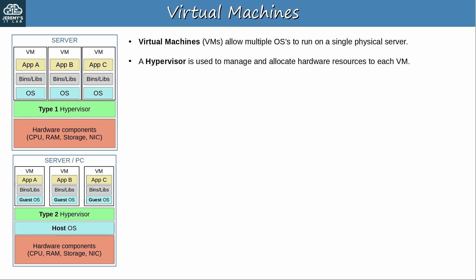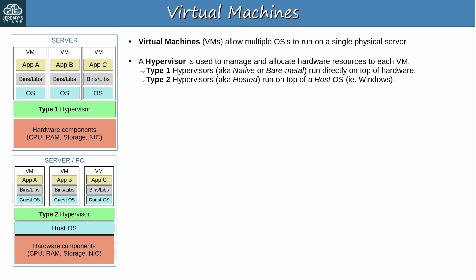There are two main types of hypervisors. Type 1 hypervisors, also known as native or bare metal hypervisors, run directly on top of hardware — notice the type 1 hypervisor directly on top of the hardware, with each VM then running on top of the hypervisor. Type 2 hypervisors, also known as hosted hypervisors, run on top of a host OS — for example Windows, macOS, or some kind of Linux. On top of the hardware there is a host OS, with the type 2 hypervisor and its VMs installed on top of the host OS.